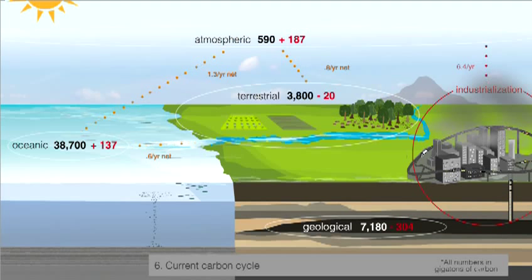One result of this shift in carbon balance is increased acidity of both the air and ocean water. Many in the scientific community are also concerned about its cumulative effect on global surface temperatures.